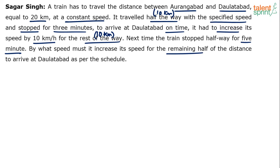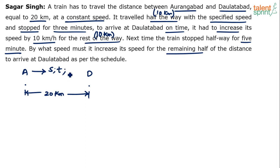Let's work on the solution now. Let's say these are the two stations, Aurangabad and Dalatabad. The total distance to be covered is 20 km. Let's assume the speed of the train is S and the time taken to cover this distance is T. There is some schedule which has to be followed to reach Dalatabad on time. So the basic equation is: distance of 20 km at speed S in time T. Since distance equals speed into time, S into T equals 20. That's the first equation.